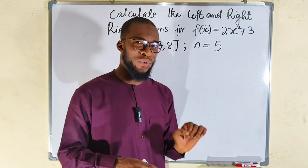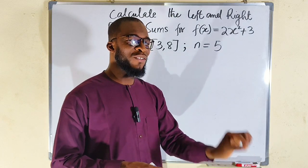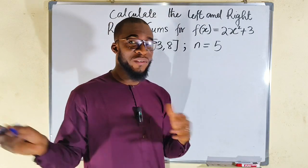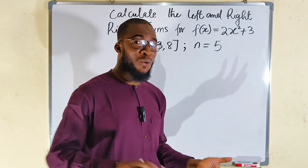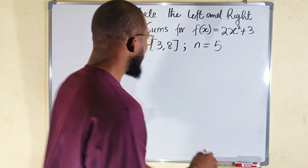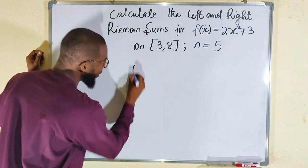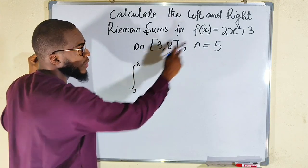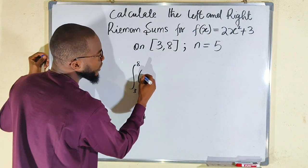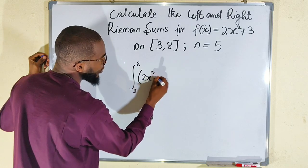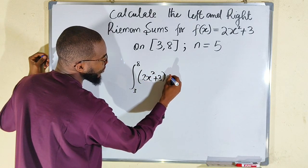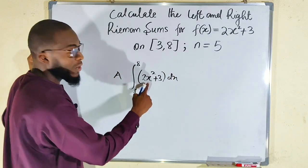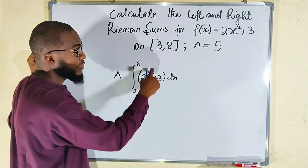Before we start, it is very important to compute the actual area so that in the end we will be able to identify whether the left or the right Riemann sum is an over or underestimate. So the actual area will be the integral from 3 to 8 of the function 2x squared plus 3 with respect to x.